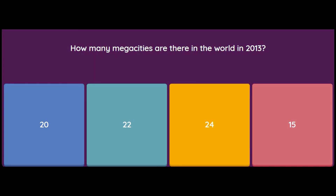The last question of Part 1: how many mega cities are there in the world as of 2013? Options: 20, 22, 24, or 15. The answer is 24. Thank you for watching — I hope you have enjoyed this video. Please like, comment, and share so that I stay motivated to keep making videos to help you prepare for your exams.